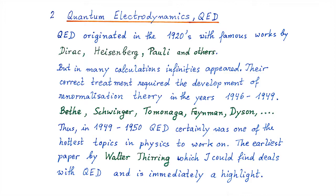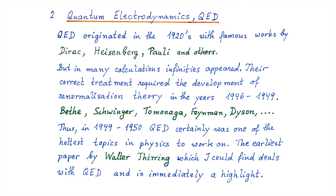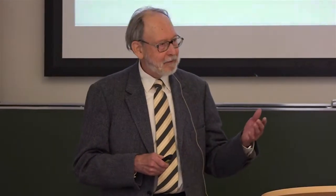Let me start with quantum electrodynamics. As you know, quantum electrodynamics originated in the 1920s with famous works by Dirac, Heisenberg, Pauli, and others. But in many calculations, infinities appeared, and their correct treatment required the development of renormalization theory. This happened in the late 1940s, from 1946 to 1949, and the famous names connected with this breakthrough: Bethe, Schwinger, Tomonaga, Feynman, Dyson, and others. In 1950, Thirring was just 23.